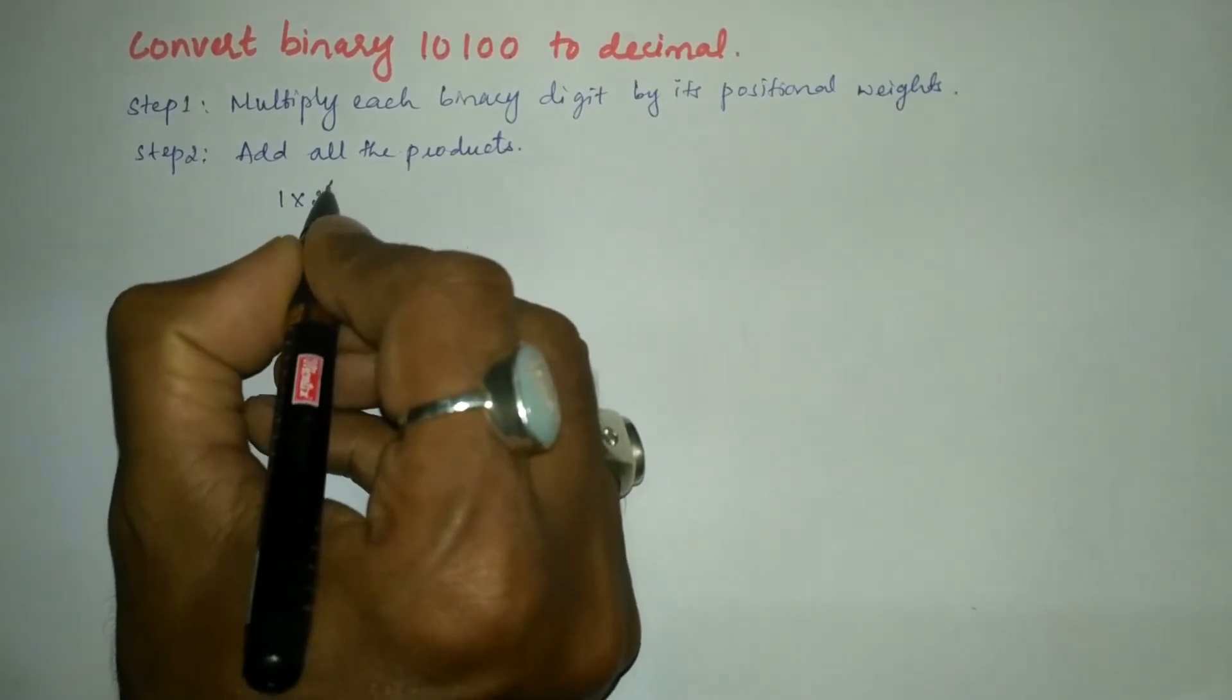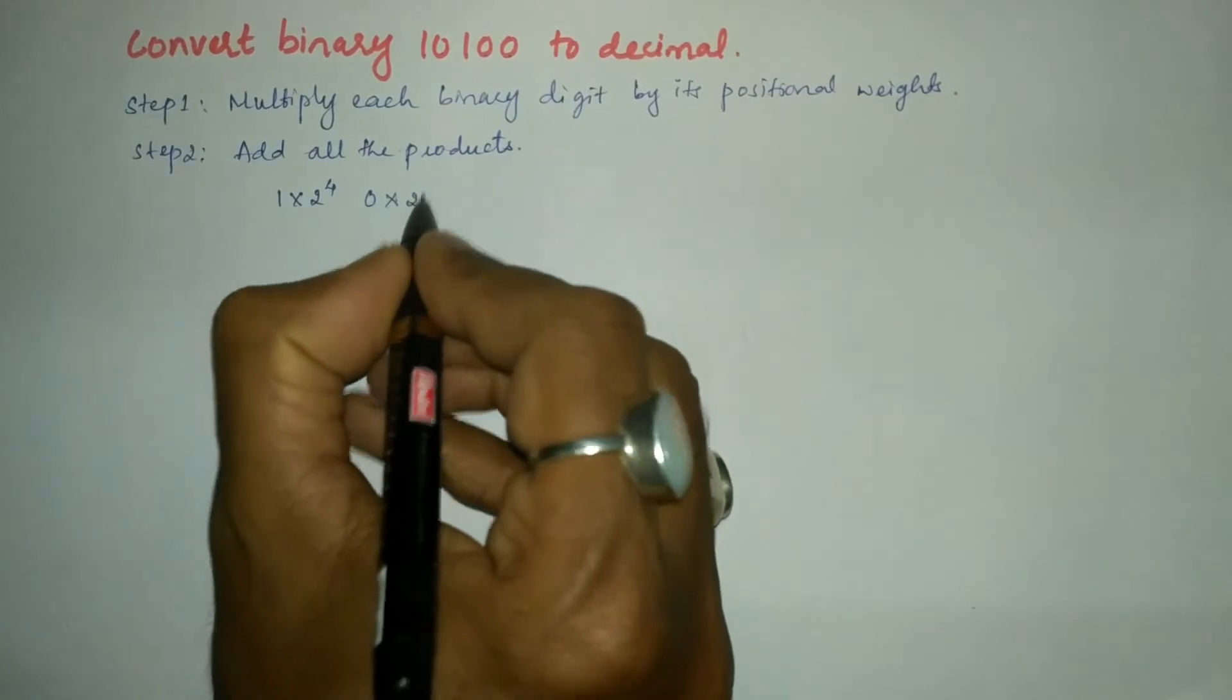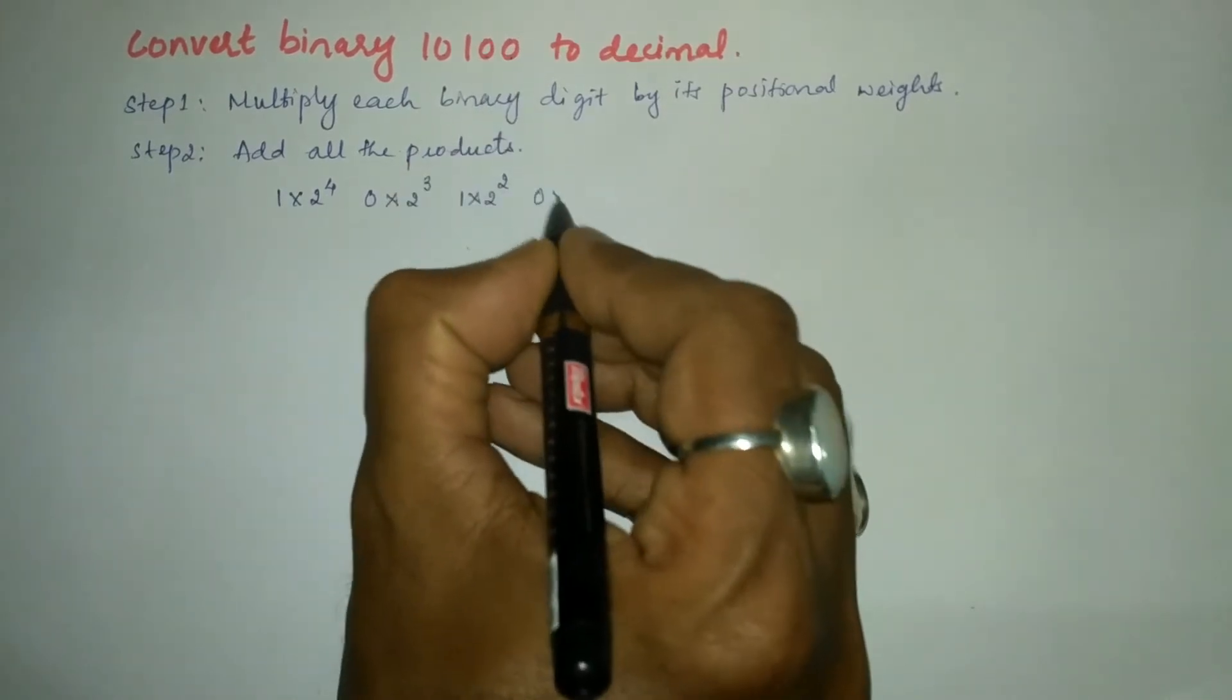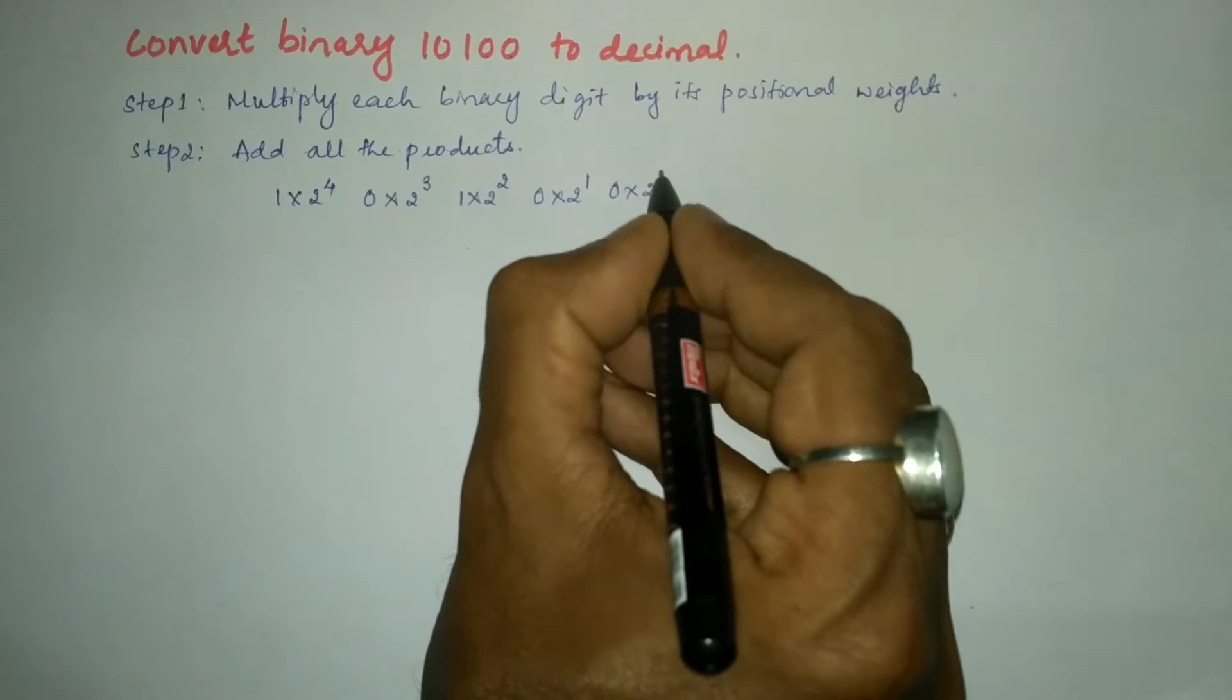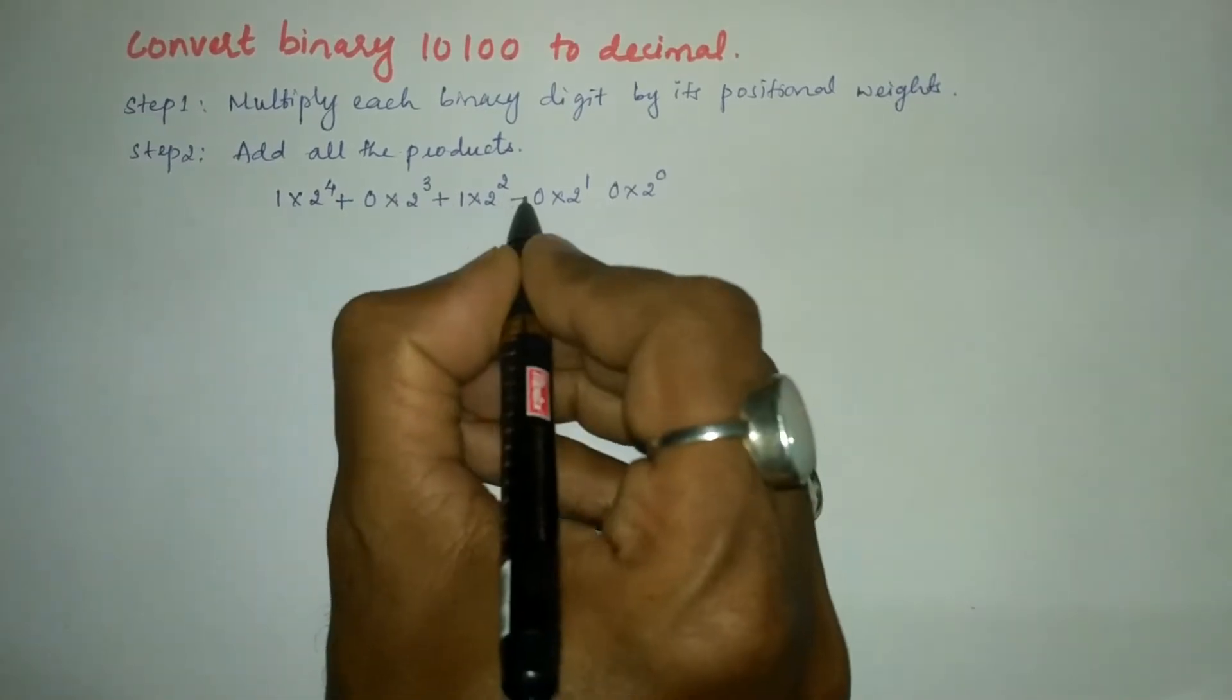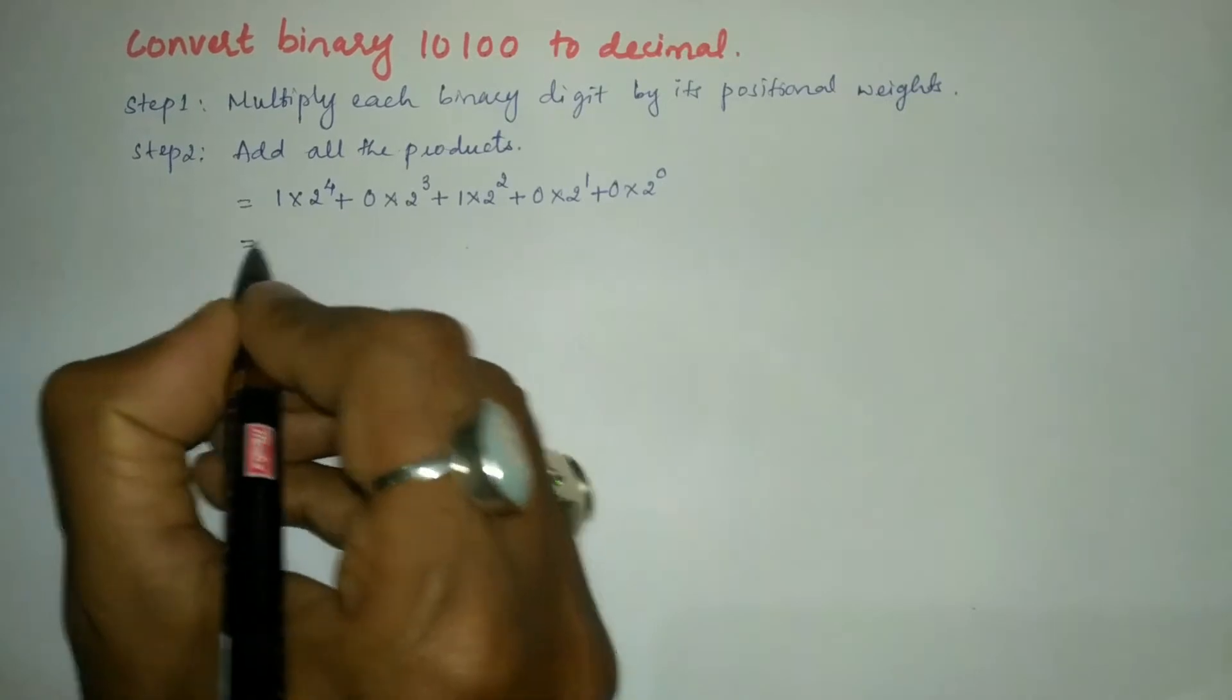So I have to write 1 × 2⁴, next 0 × 2³, next bit number 1 × 2², similarly 0 × 2¹, next 0 × 2⁰. The second step says add all the products, so all of these products are to be added. Here I'm going to write plus operator.